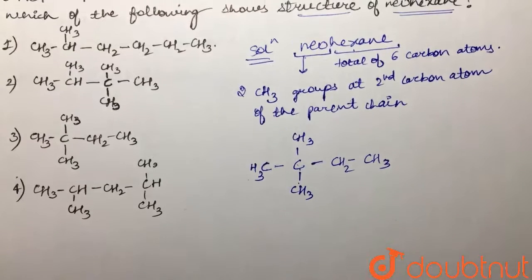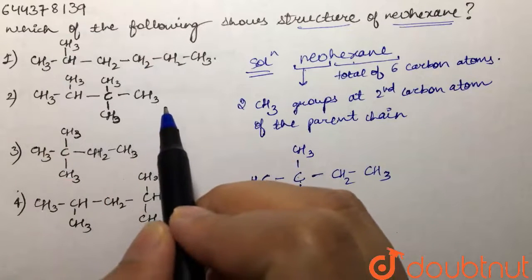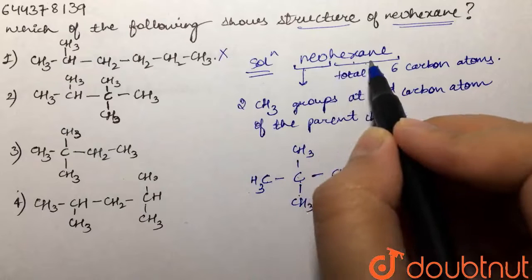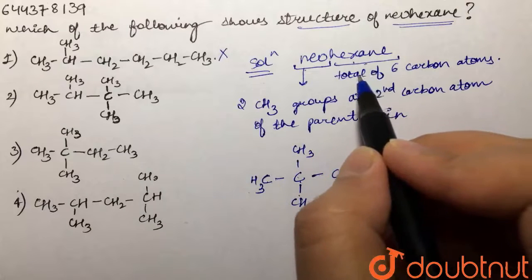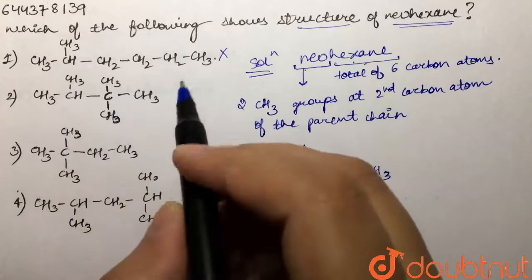If we look at our first structure, we have one, two, three, four, five, six, seven carbon atoms. So this is not our correct option because neohexane should have six carbon atoms in total. In the second structure, we have one, two, three, four, five, six, and seven again, so this gets cancelled.